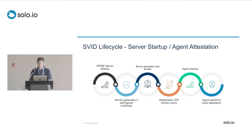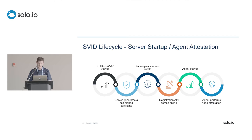When bootstrapping this environment, we start by booting up the SPIRE server. Assuming you haven't given it a root CA, it's going to generate a self-signed certificate. If it's the first time this particular server is starting up, it'll generate a trust bundle. At that point the server is basically bootstrapped — it starts the registration API, which can be called to register new workloads. The SPIRE server is then ready to start receiving traffic, so we can start up our agents.